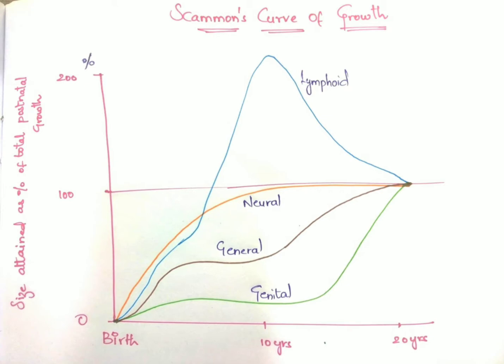What is Scammon's Growth Curve? What is it going to explain to us? The body tissues can be broadly divided into four types: lymphoid, neural, general, and genital. We are going to plot the growth of these tissues at what age they are going to grow and to what percentage.